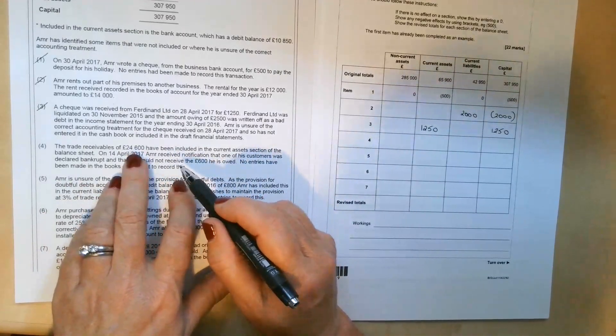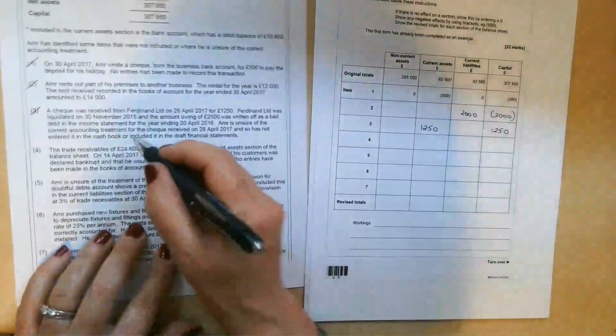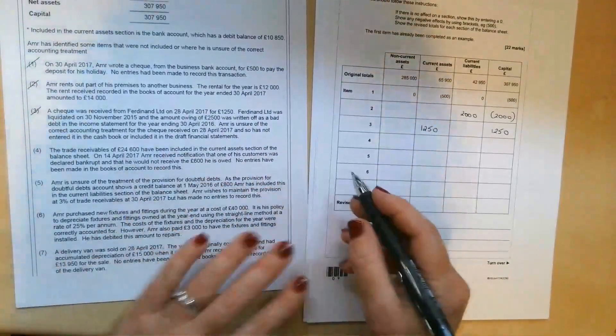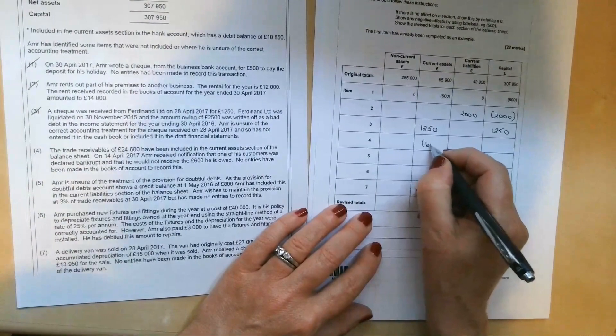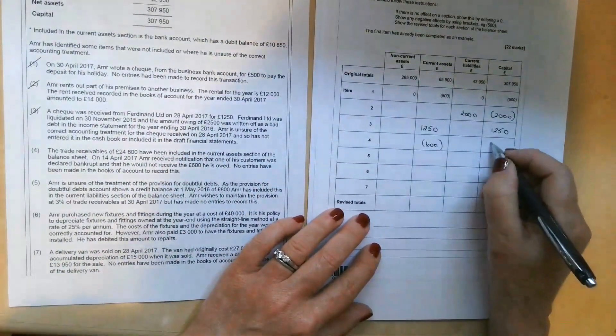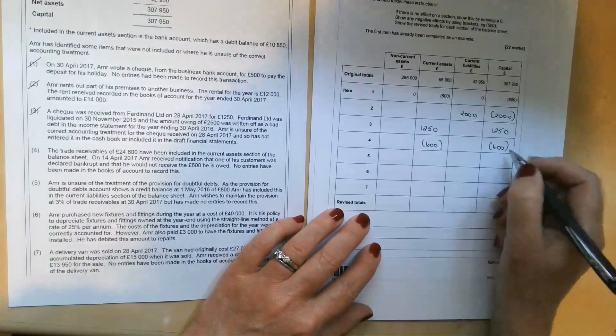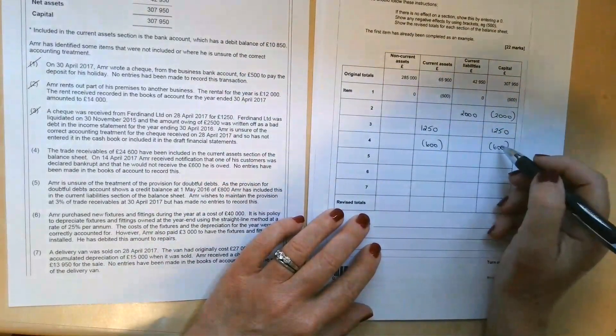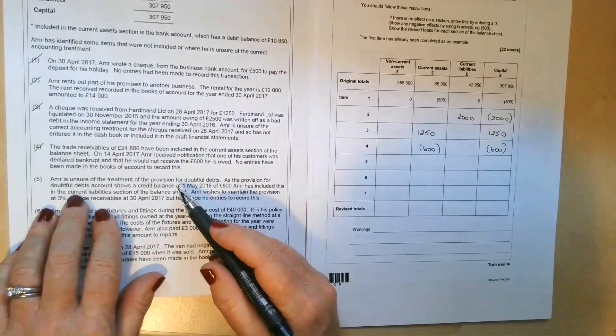So this is an actual irrecoverable debt. So we need to take that off of the trade receivables. So trade receivables are in current assets. So we're going to reduce those by £600. And we're going to be writing that off as an expense. So profit will go down by £600. Therefore, the capital account will be reduced by £600.